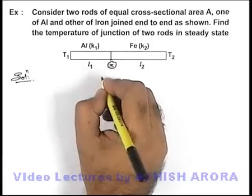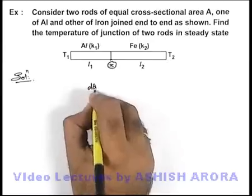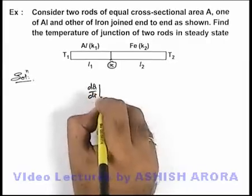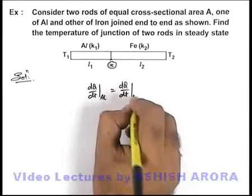As it is given that T1 is more than T2, we can simply write: in steady state, dQ/dt rate of flow of heat in aluminum must be equal to dQ/dt rate of flow of heat in iron.